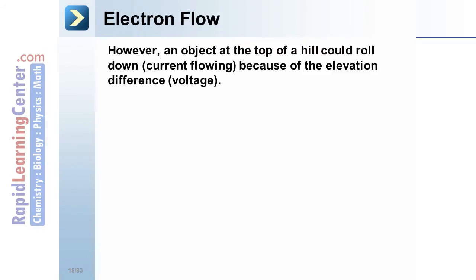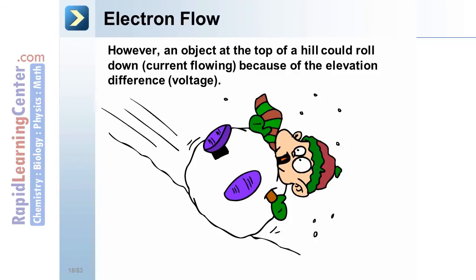Electron flow. On the other hand, an object at the top of a hill could roll down current flowing because of the elevation difference. There is an electric potential difference or voltage.